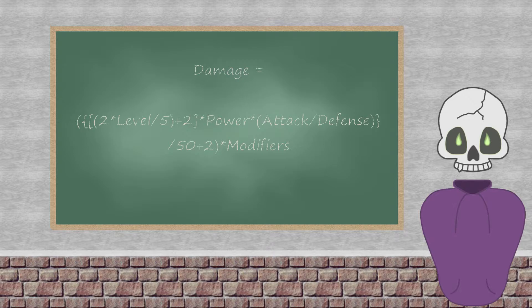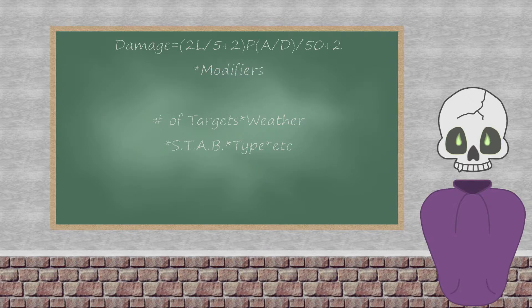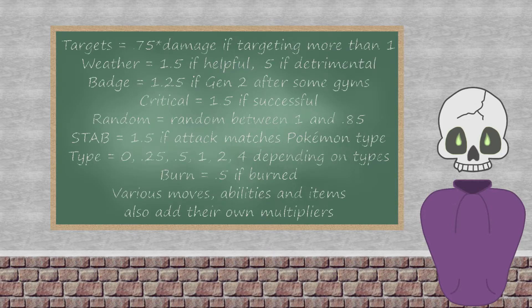However, multiple outside modifiers can provide an extra punch or nerf it into nothing. Modifiers such as number of targets like in double battles, weather conditions like rain which hinders fire type moves, same type attack bonus which allows an electric type's thunderbolt to deal more damage, type effectiveness, and more.